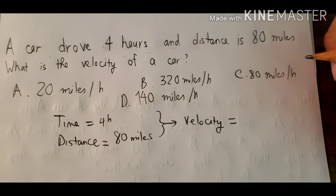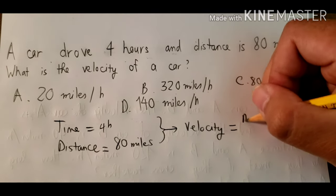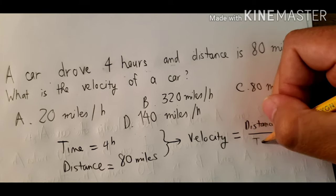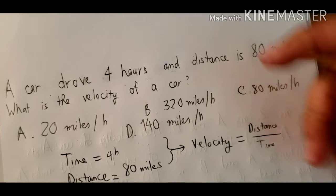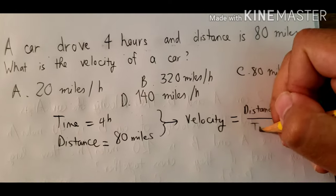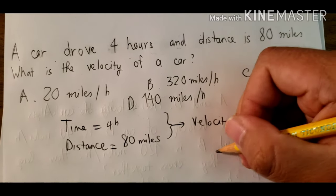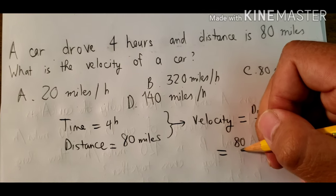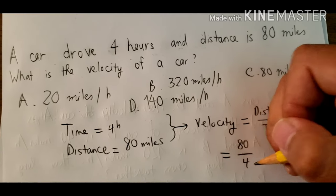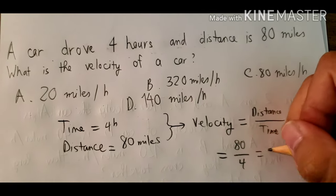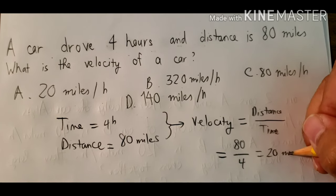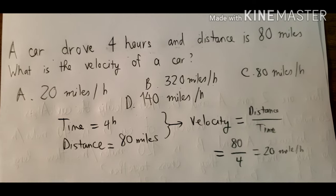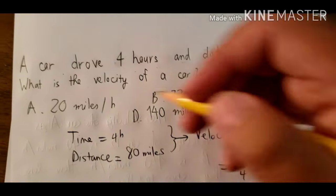The question asks about the velocity. To calculate the velocity, you just use the distance divided by time. So we have 80 divided by 4, and we get 20 miles per hour. The answer is A.